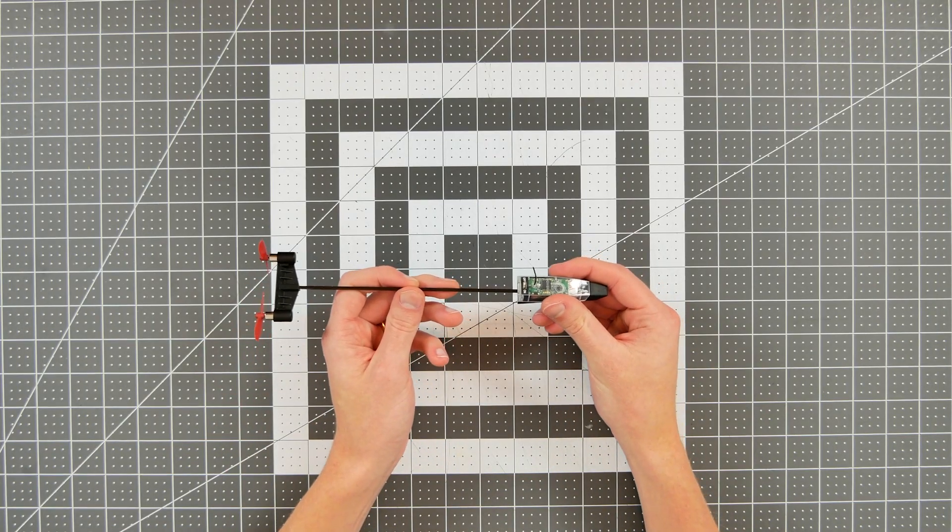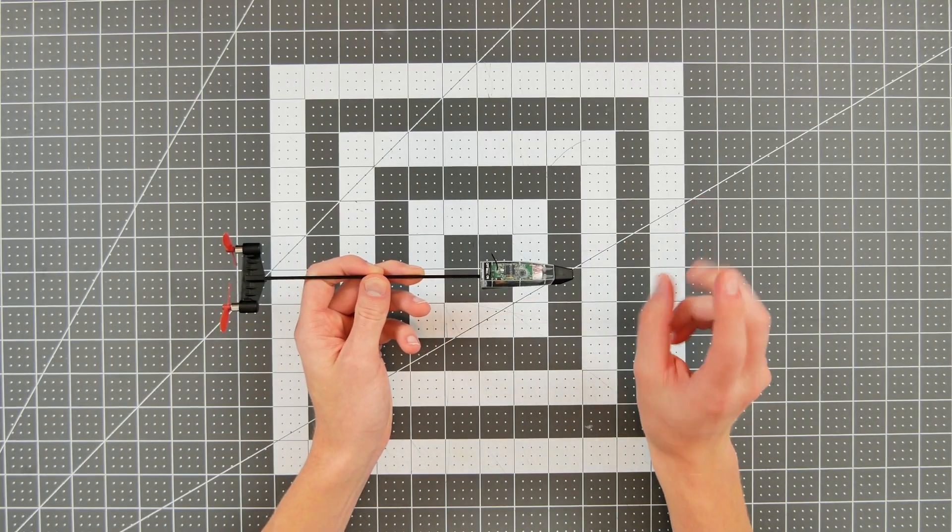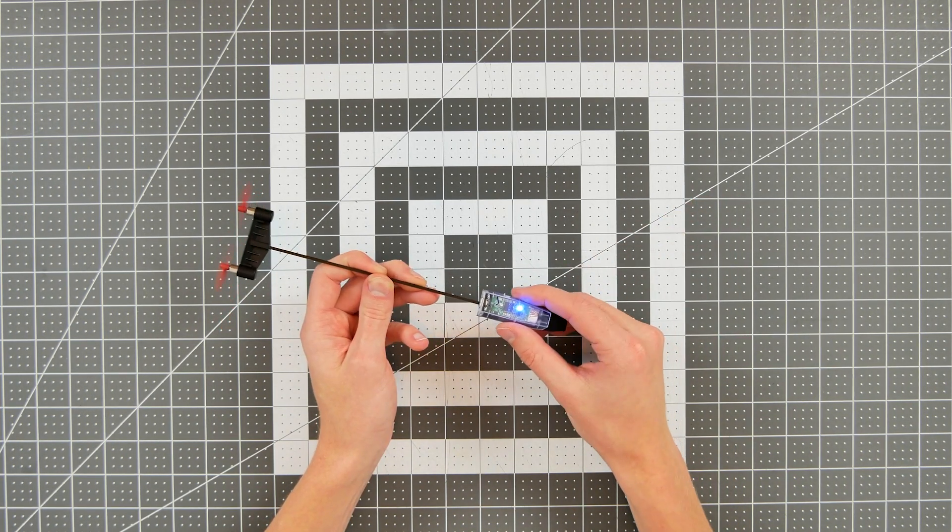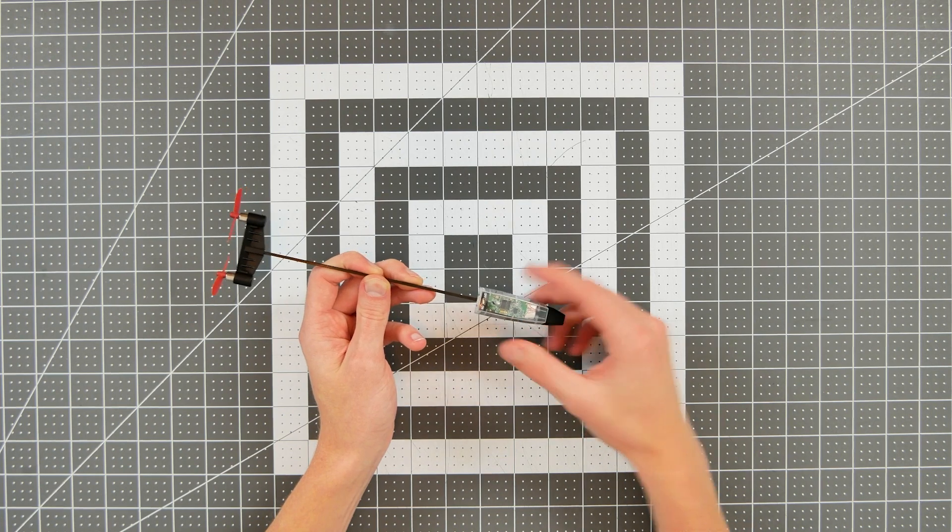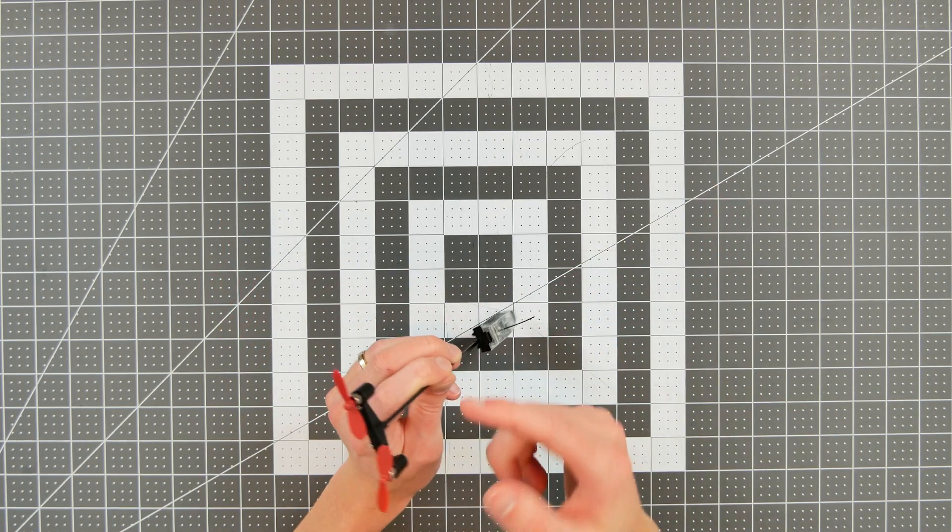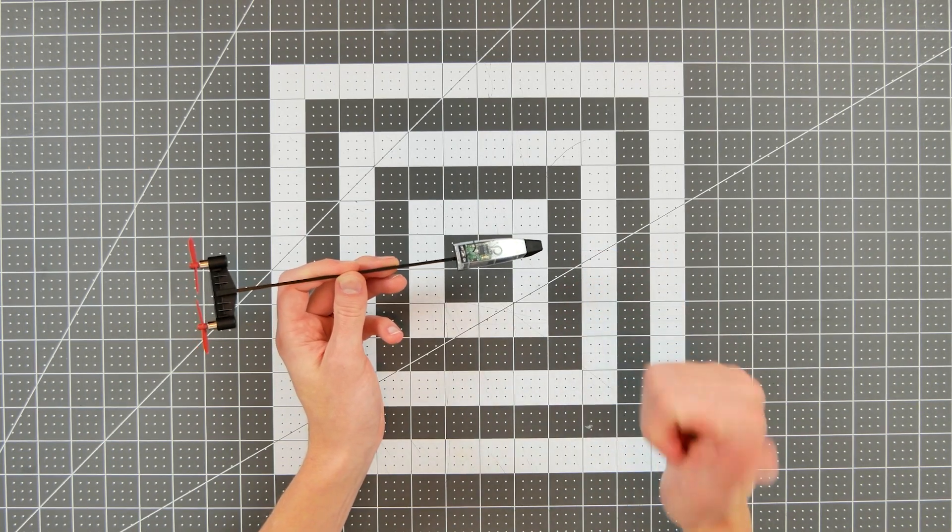After opening your module, the first thing you'll want to do is perform a power and communication check. So you can see we have a switch here right on the top of the module. And when I turn it on, three things happen. We get a blue blinking light, we get that audible chime, and the propellers spin. Those three things are just saying, hey, your module works.